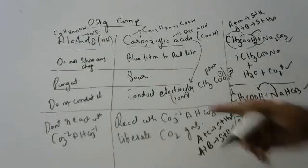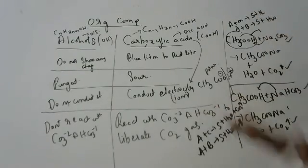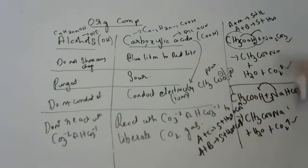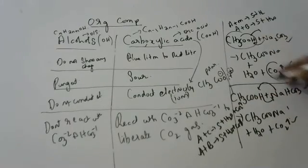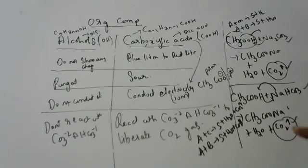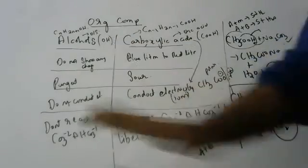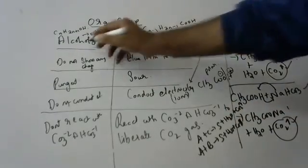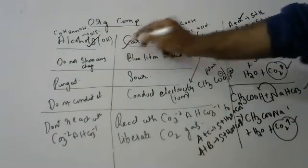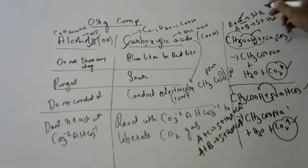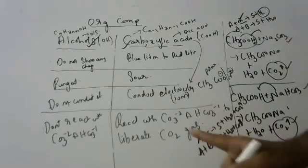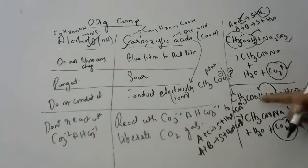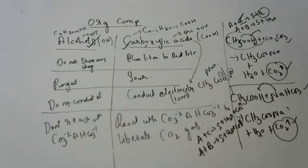All these reactions we have studied. Carboxylic acids react with carbonates and bicarbonates to liberate carbon dioxide. Whereas alcohols do not react with carbonates and bicarbonates. Alcohols can react with metals, and carboxylic acids can also react with metals. The only difference is that carboxylic acids react with carbonates and bicarbonates to liberate carbon dioxide.